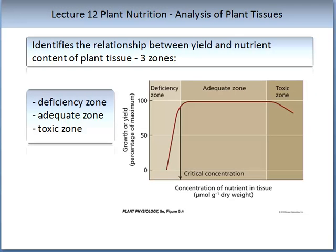So why are minerals so important to plants? We have known for some time that there is an important relationship between yield and the nutrient content of plant tissue. You can break this down into three zones. The first zone is described as the deficiency zone — if your plants are growing in this zone, they are not reaching their optimal yield.